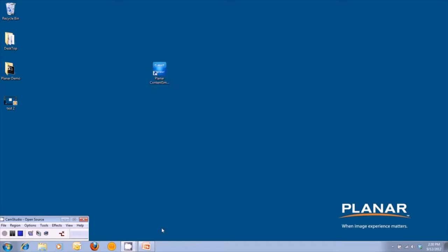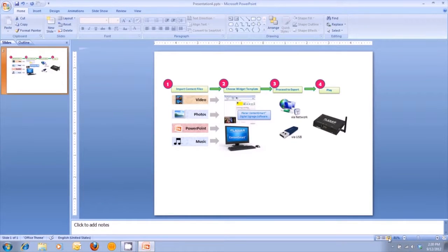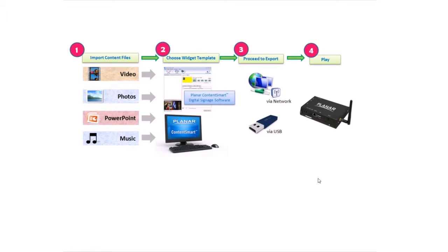Before I take you into the actual software, here's a simple visual tool to show you what we're going to be going over in video number two. The first step is taking your existing assets — whether it's a video file, a photo file, PowerPoint, or music — and importing those onto the Planar Content Smart digital signage software. Once you've designed your playlist, you'll export that to your media player either via the network or a USB card. And once you export it to the media player, that will allow the digital signage display to start working.